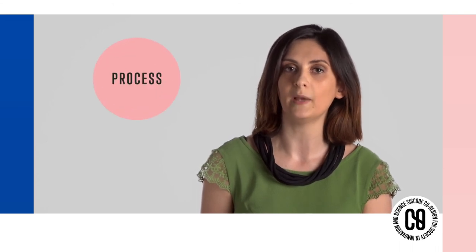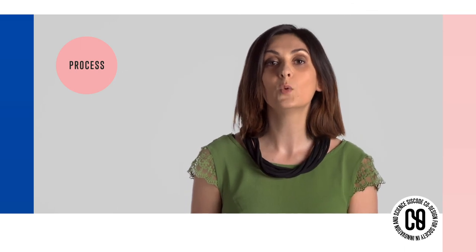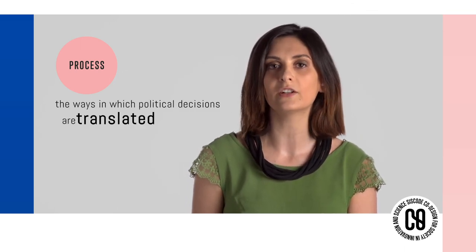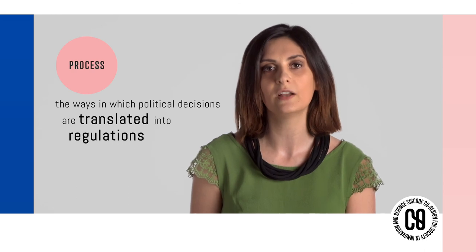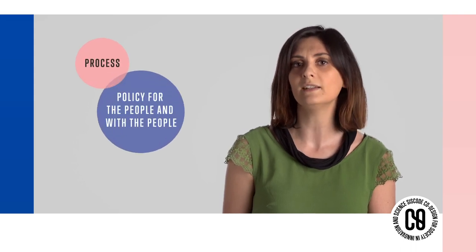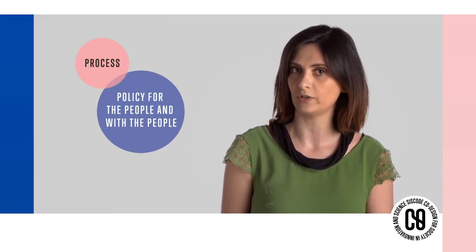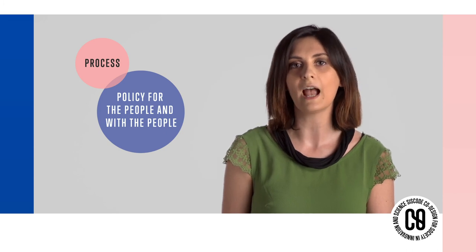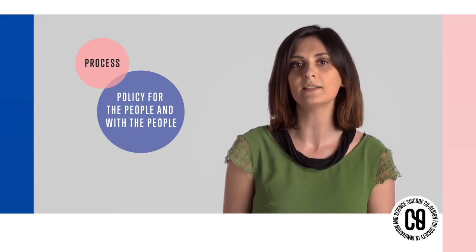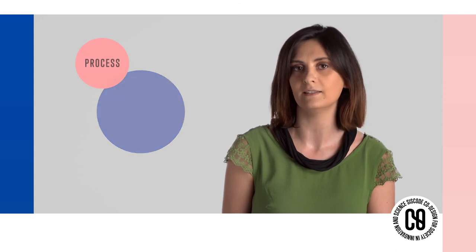Finally, the third area in which design can offer support is the process of policymaking. By process, we mean the ways in which political decisions are translated into regulations ready for the people to adopt them. Design can contribute to creating a complex space where several conditions meet: understanding people's real needs, creating a regulation that works for them, and communicating how the regulation addresses their needs in a way that everyone can understand.